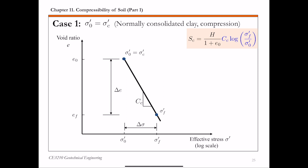For the first case, the initial effective stress in the clay, sigma naught prime, is equal to the pre-consolidation pressure sigma C prime. So the clay is normally consolidated. If clay is normally consolidated, it's going to follow the steeper slope — the virgin compression curve with a slope of C sub C. The void ratio change delta E is related to the effective stress change delta sigma through the slope C sub C. Looking at the equation on the right, the highlighted part is the void ratio change delta E.